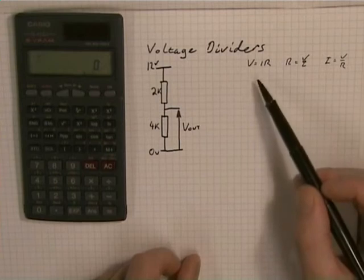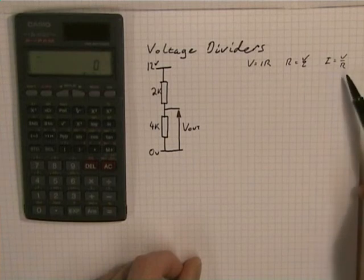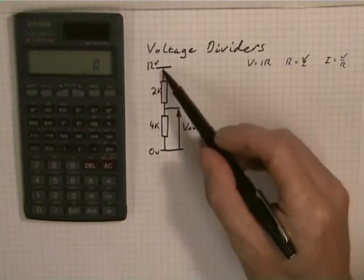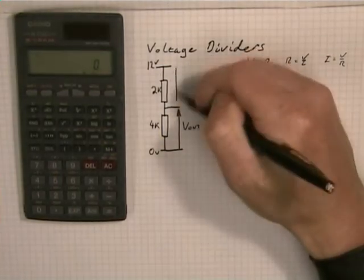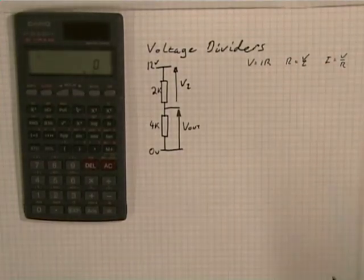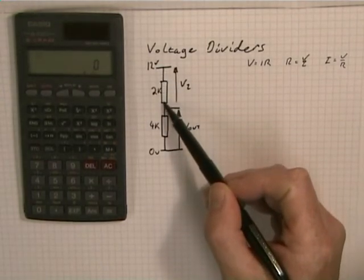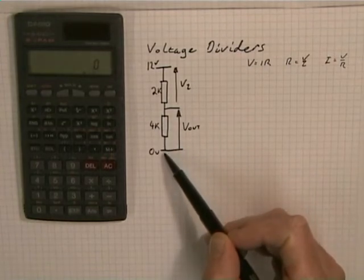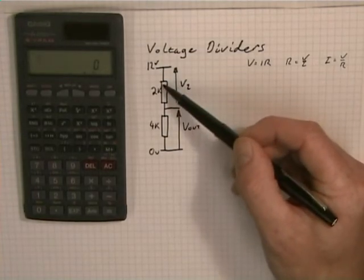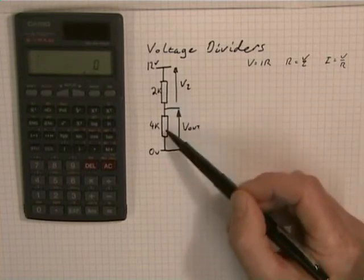Now what we know are Ohm's laws: V equals IR, R equals V upon I, and I equals V over R. We also have Kirchhoff's voltage law, which says that 12 volts will equal V out plus that voltage there, I'll call it V2. We also know from Kirchhoff's current law that the current flowing down here must be the same all the way down. Remember, current is like water flowing. There's only one path for the water to go, so it's the same current going through the 2k that goes through the 4k.